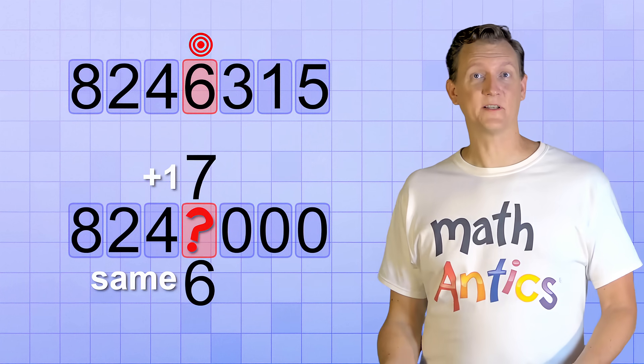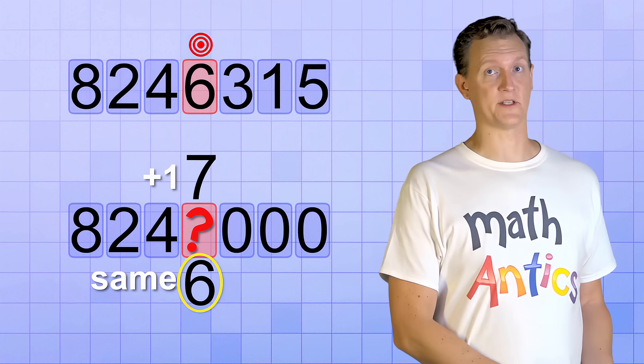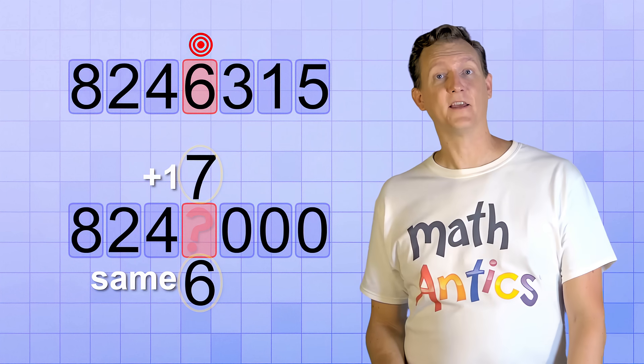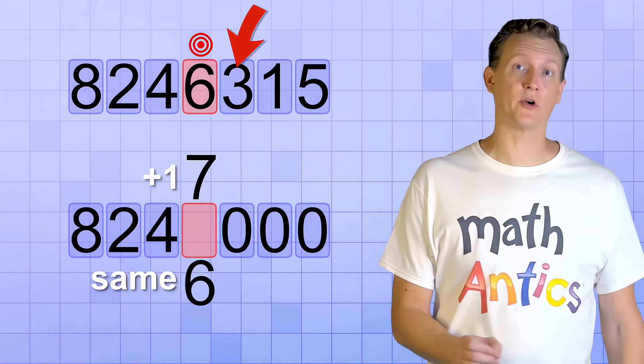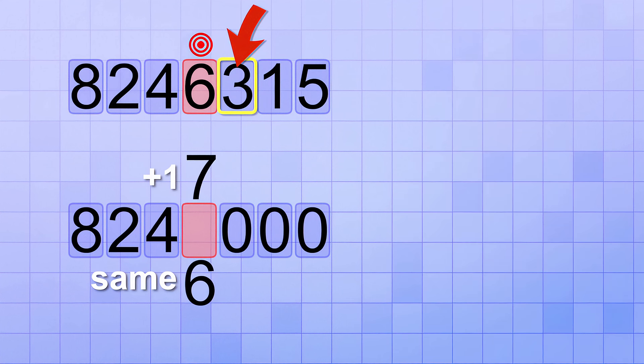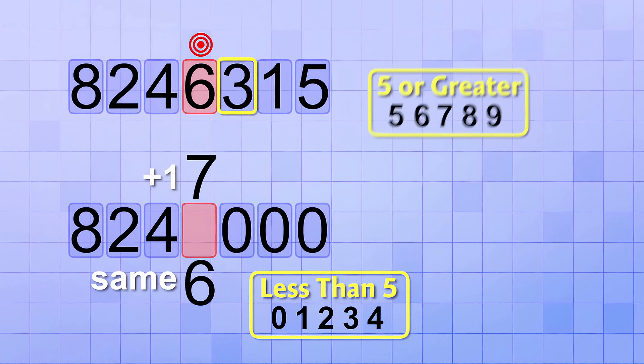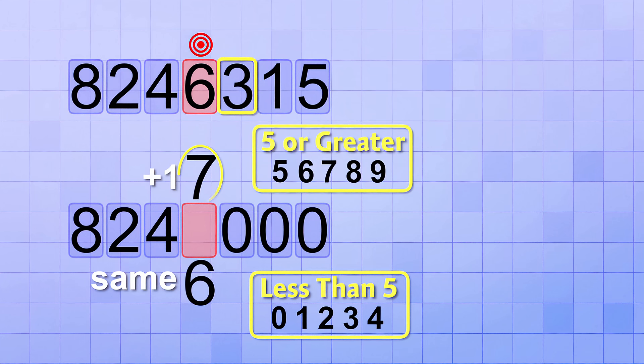Alright, but how do we decide which to do? How do we know if we keep the target digit the same, or increase it by one? The key is to look at the digit in the next smaller number place, the digit that's just to the right of the target digit. If that digit is less than 5, in other words, if it's a 0, 1, 2, 3, or 4, then we'll leave the target digit the same in the rounded version. But if the digit is a 5 or greater, 5, 6, 7, 8, or 9, then we'll increase the target digit by 1.